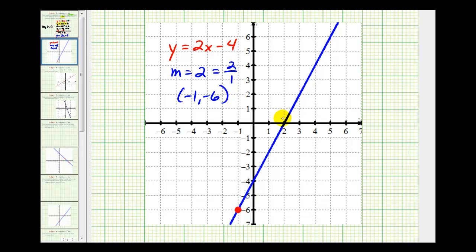Well, notice how this blue line does contain the point negative one, negative six, as we see here. And if we select any point on this line, let's say this point here, and we go up two and right one, this does verify the slope of the blue line is two.